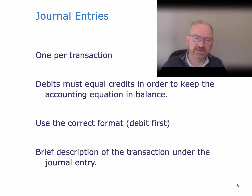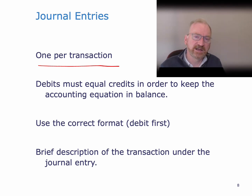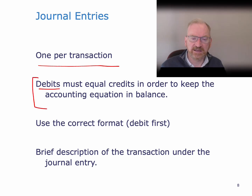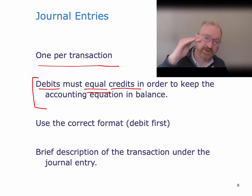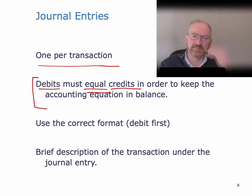Journal entries: we make one per transaction. We take a transaction the company has done and we work out what are the debits and credits required to record it. We do that by thinking about what assets, liabilities, and equity items have been affected by the transaction. Debits must equal credits in order to keep the accounting equation in balance. For each transaction, we have to make sure that debits equals credits. You can have multiple debits and multiple credits in a transaction — you can have 20 of them if you want — but you've got to make sure the debits are equal to the credits.